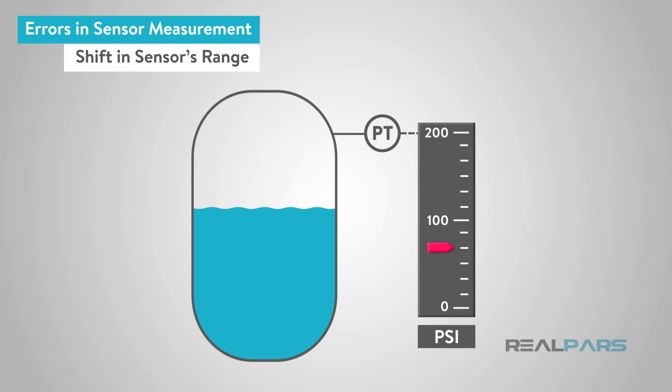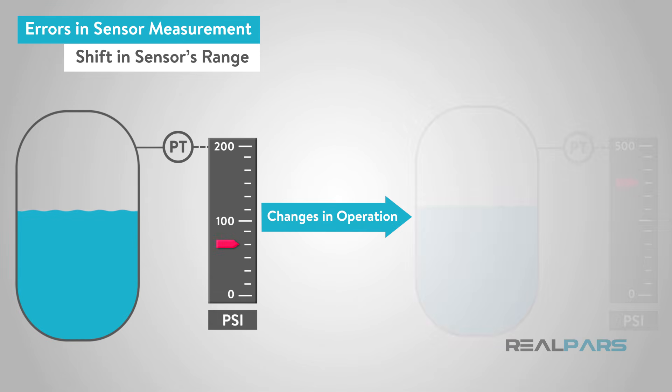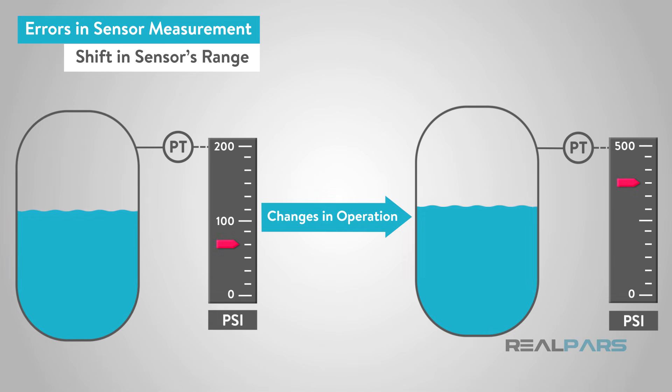Second, the sensor's range may shift due to the same conditions just noted, or perhaps the operating range of the process has changed. For example, a process may currently operate in the range of 0 to 200 pounds per square inch, but changes in operation will require it to run in the range of 0 to 500 pounds per square inch.